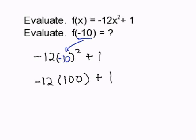Now I'm going to multiply negative 12 times 100. That's going to get me negative 1,200 plus 1.